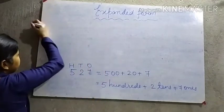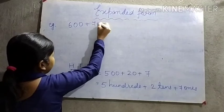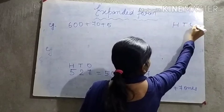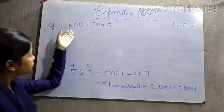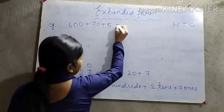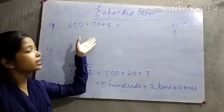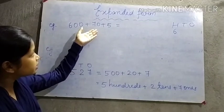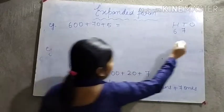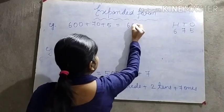So let's take an example: 600 plus 70 plus 5. Again, we have to assign its position — hundreds, tens, and ones. 600 comes under hundreds, so we write here only 6. 70 comes under tens place, so we write here only 7. 5 is in the ones place, so we write here only 5. So our short form is 675.